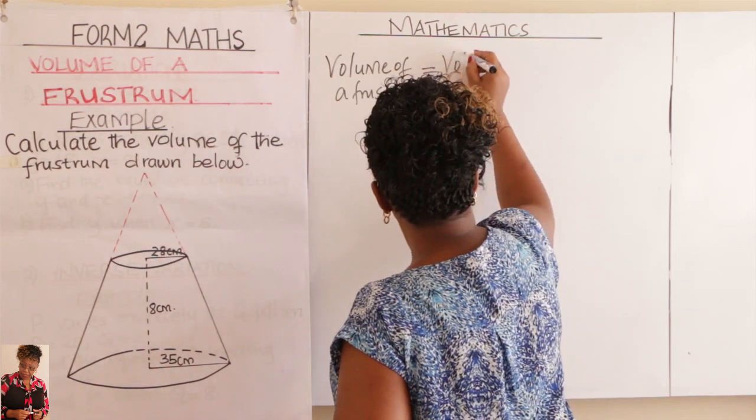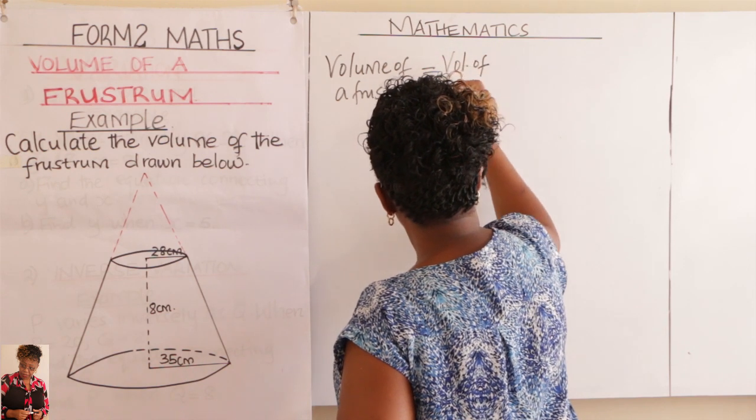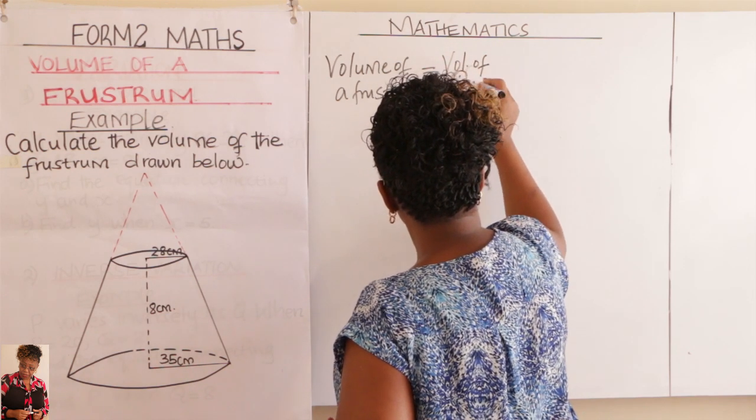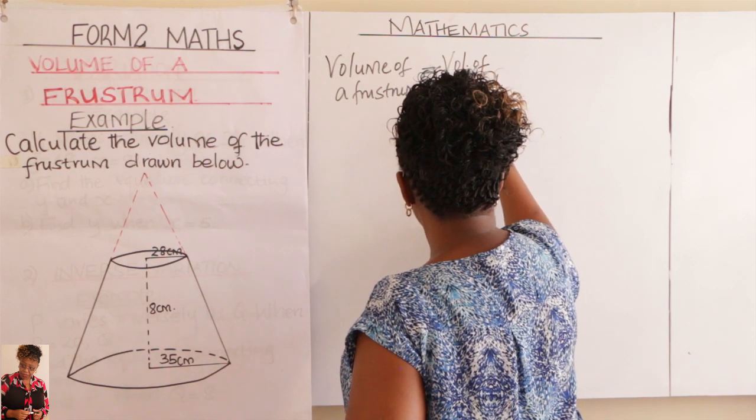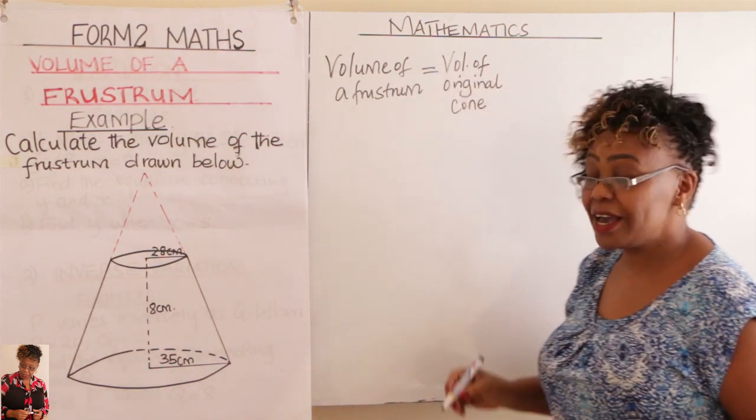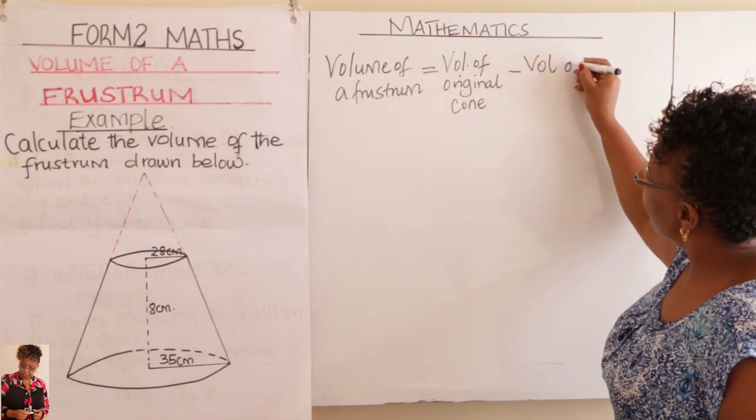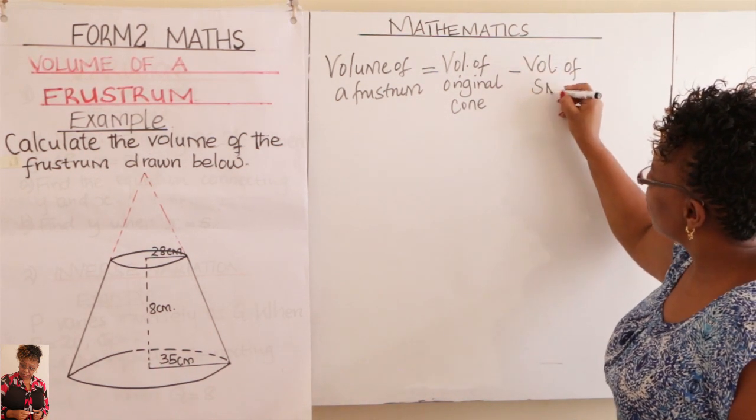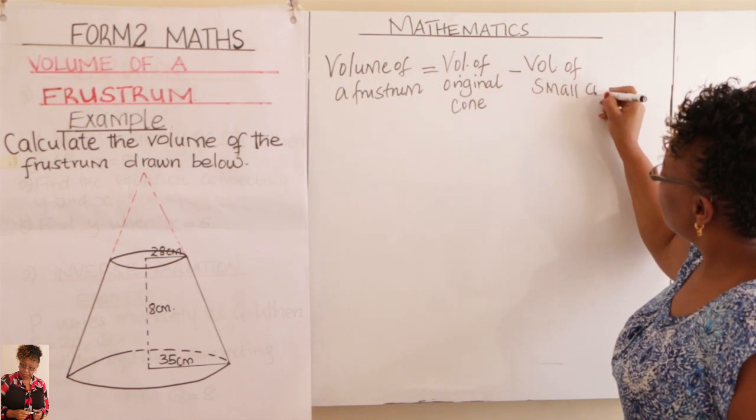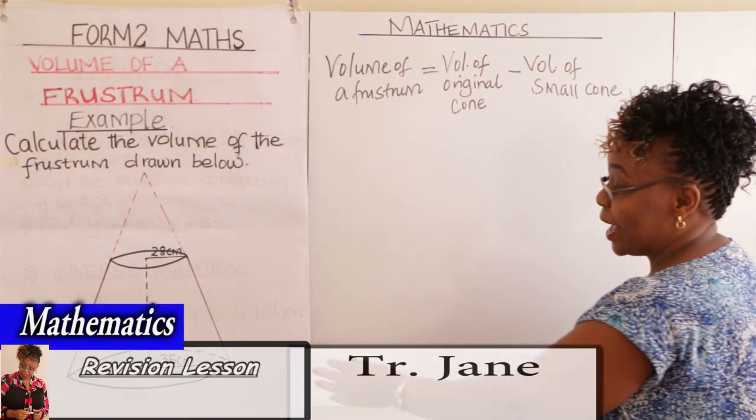So this is volume of the original cone, yes, minus volume of the small cone.